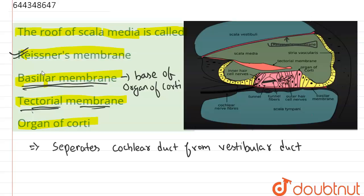Here this particular pink color structure which we can see is your tectorial membrane. Now tectorial membrane is a membrane which is present above organ of Corti and inside the scala media.